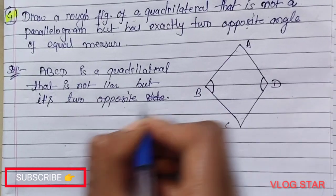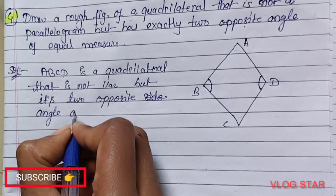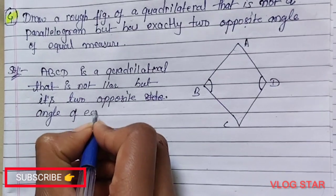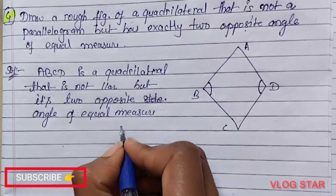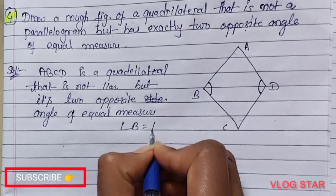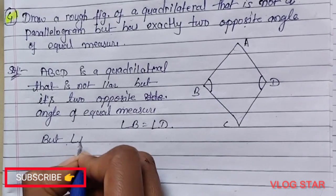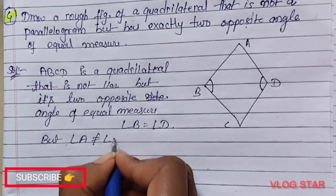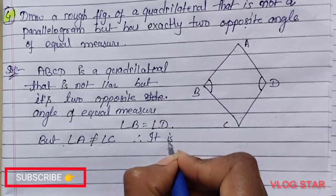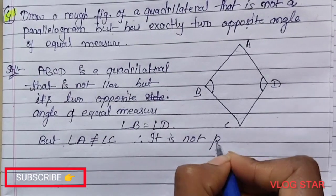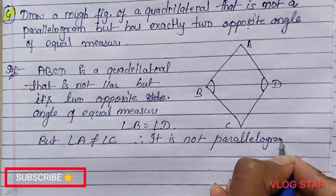Two opposite angles of equal measure means angle B is equal to angle D. But angle A is not equal to angle C. These two angles, therefore it is not a parallelogram.